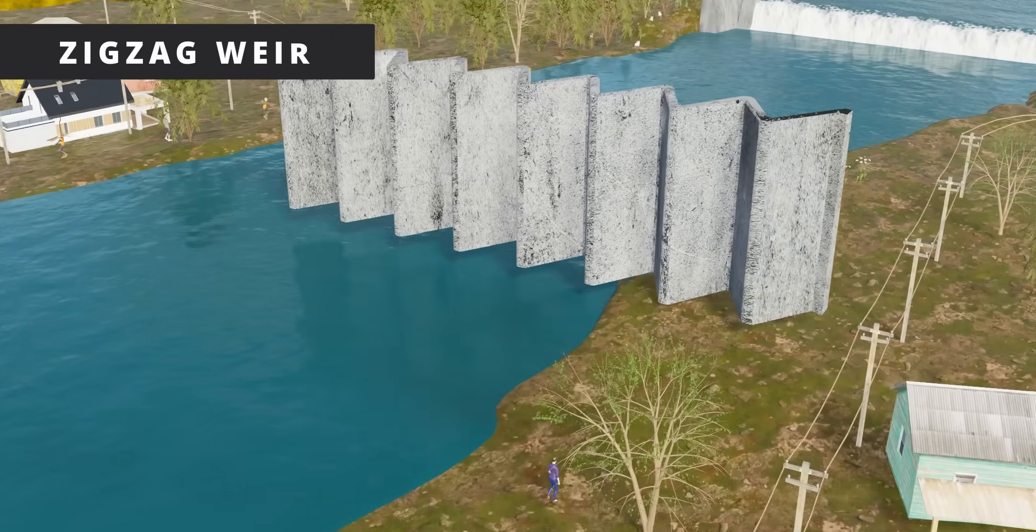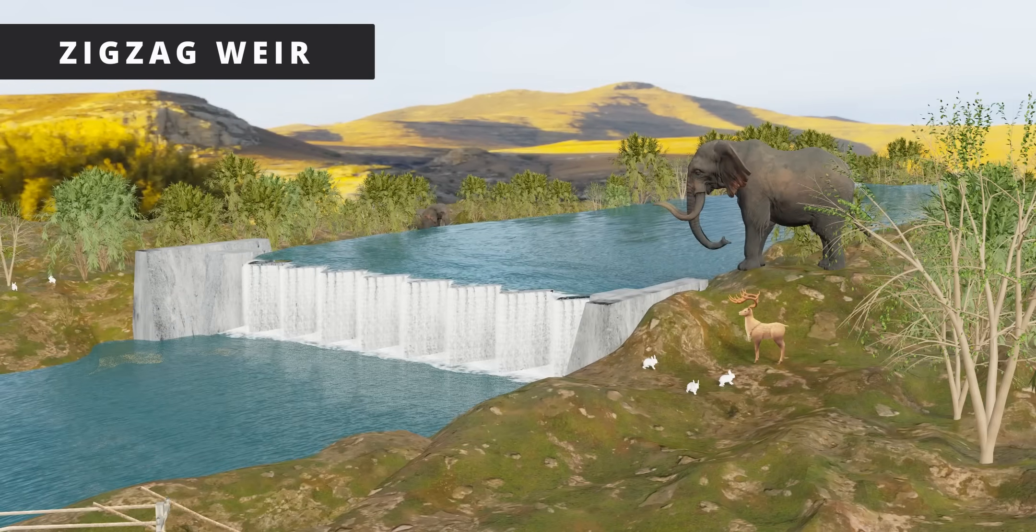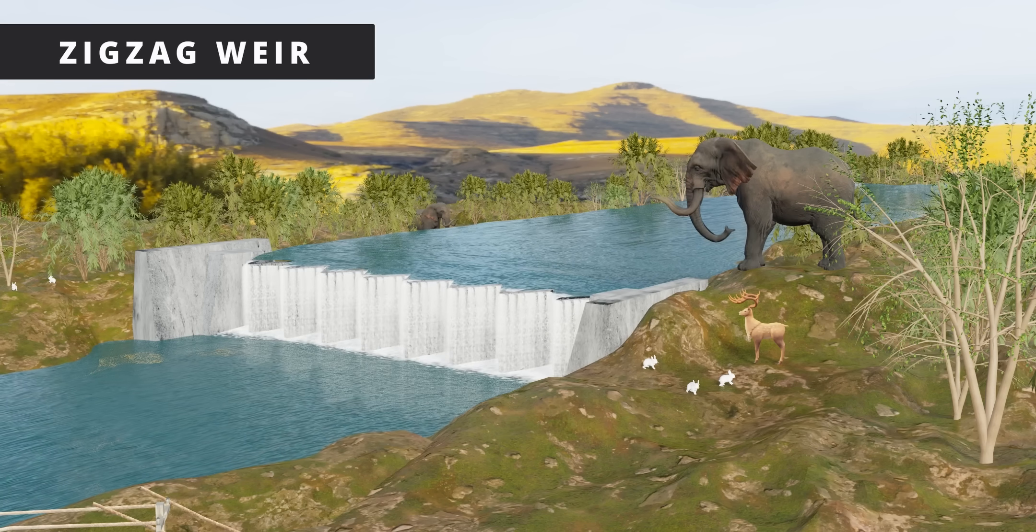This shows us that it is better to use a zigzag weir in our landscape. The animals in the forest will also have a more peaceful life.